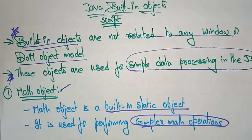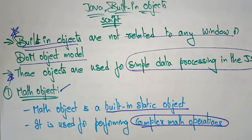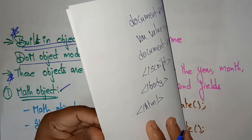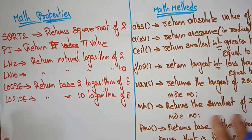For example, in C programming, if you want to use normal addition, subtraction, multiplication, or division, you don't need to include any library — you don't need to call hash include math.h. But whenever you're using sine, cosine, pi values, or radius calculations, it's compulsory to include the library function — that is hash include math.h. In the same way, in JavaScript, when you are using complex mathematical operations, it is necessary to call the Math objects.